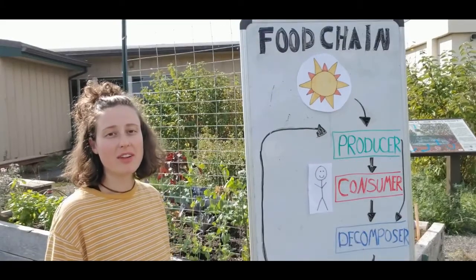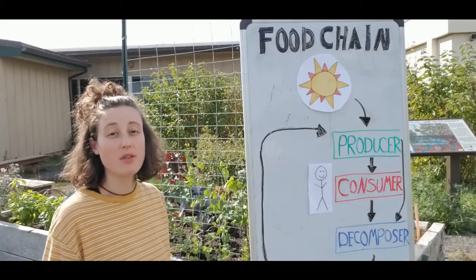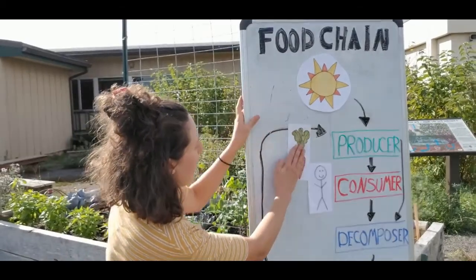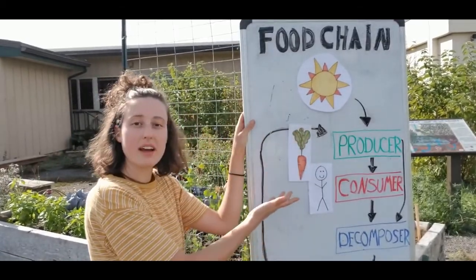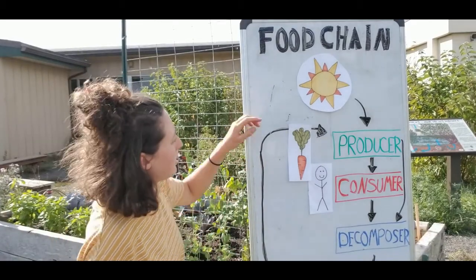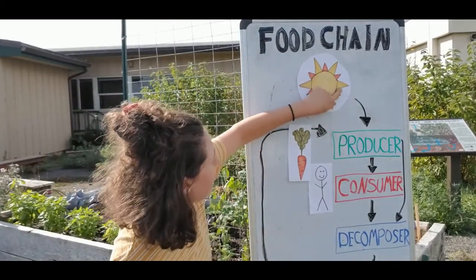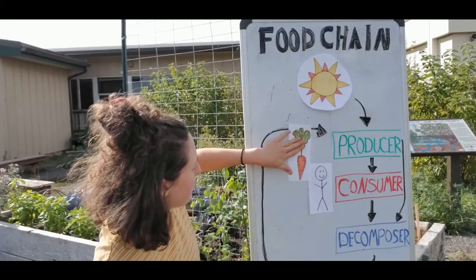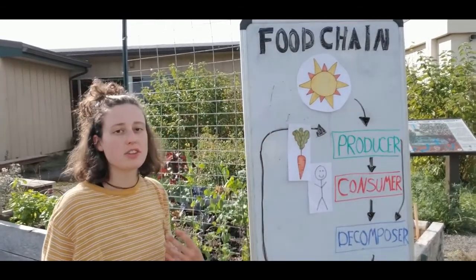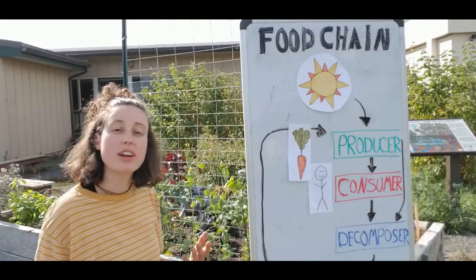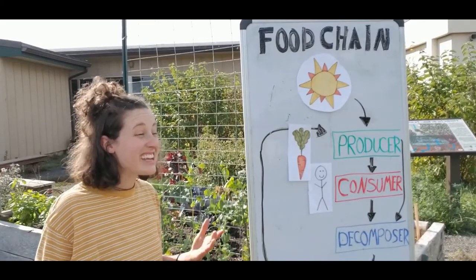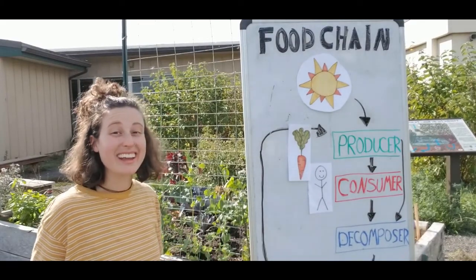Producers, on the other hand, are able to make their own food using the sun. An example of a producer might be a carrot or another plant that we would eat. And we can see that the energy from the sun travels into the producer, and then the energy is transferred into the consumer when the consumer eats the producer. So when we eat a carrot, it's kind of like we're eating the sun.